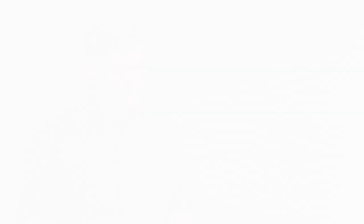Here's the Magnus supercomputer at the POSI Centre. 35,000 cores plus, delivering 1.5 petaflops, serving Australia. It was 58th fastest in the world when it appeared.